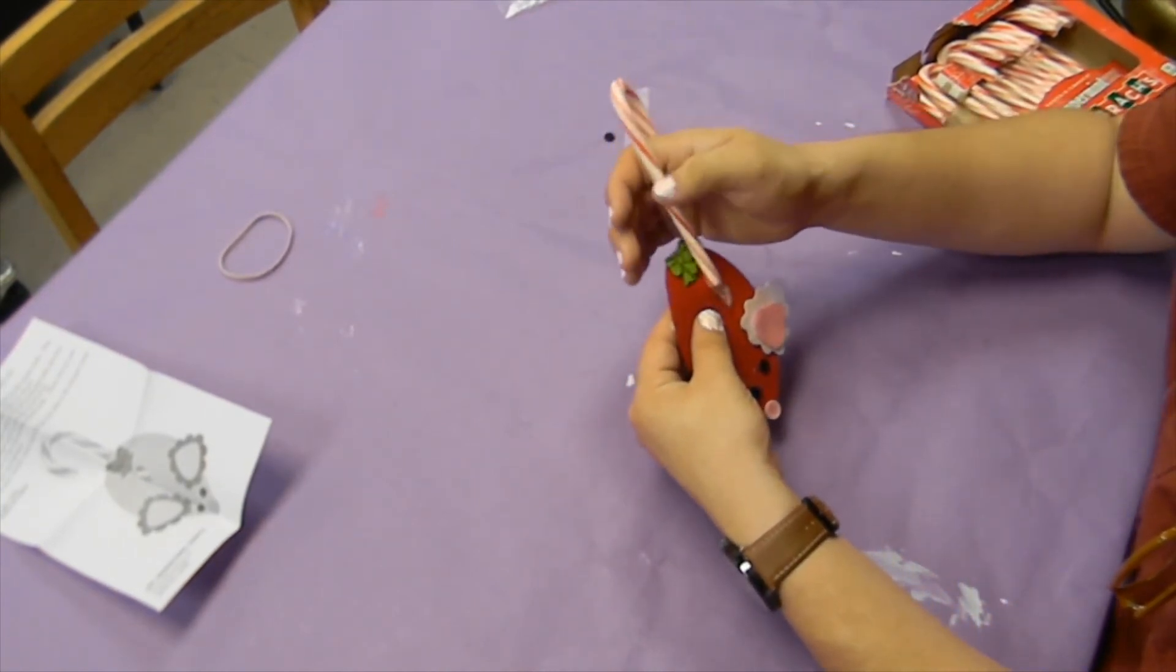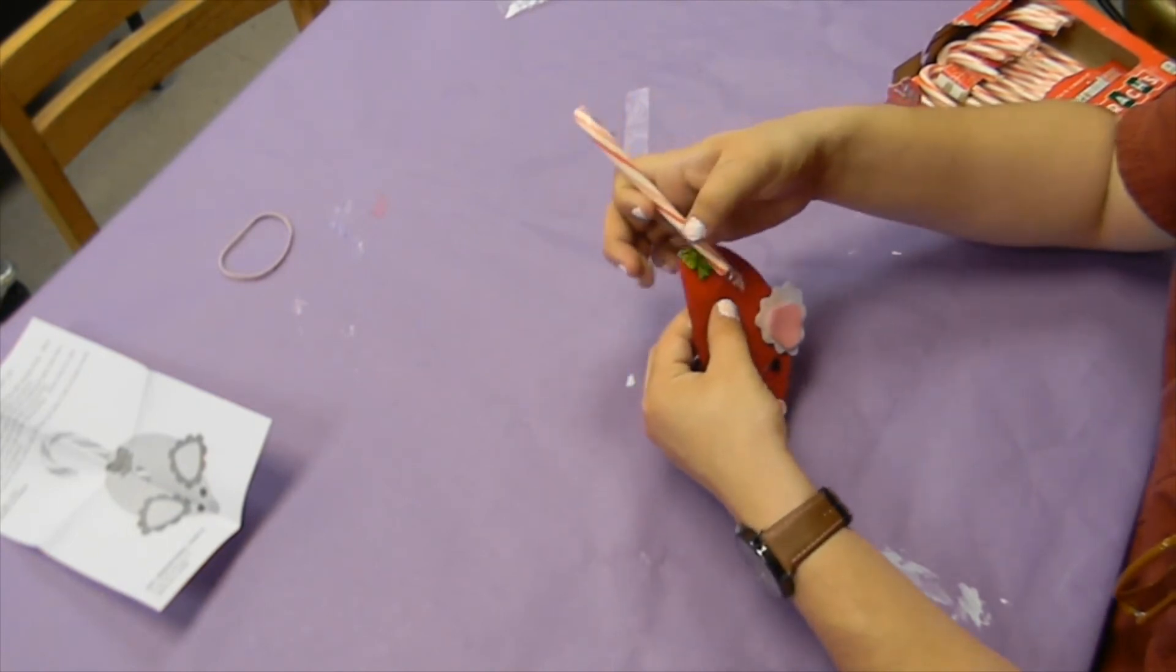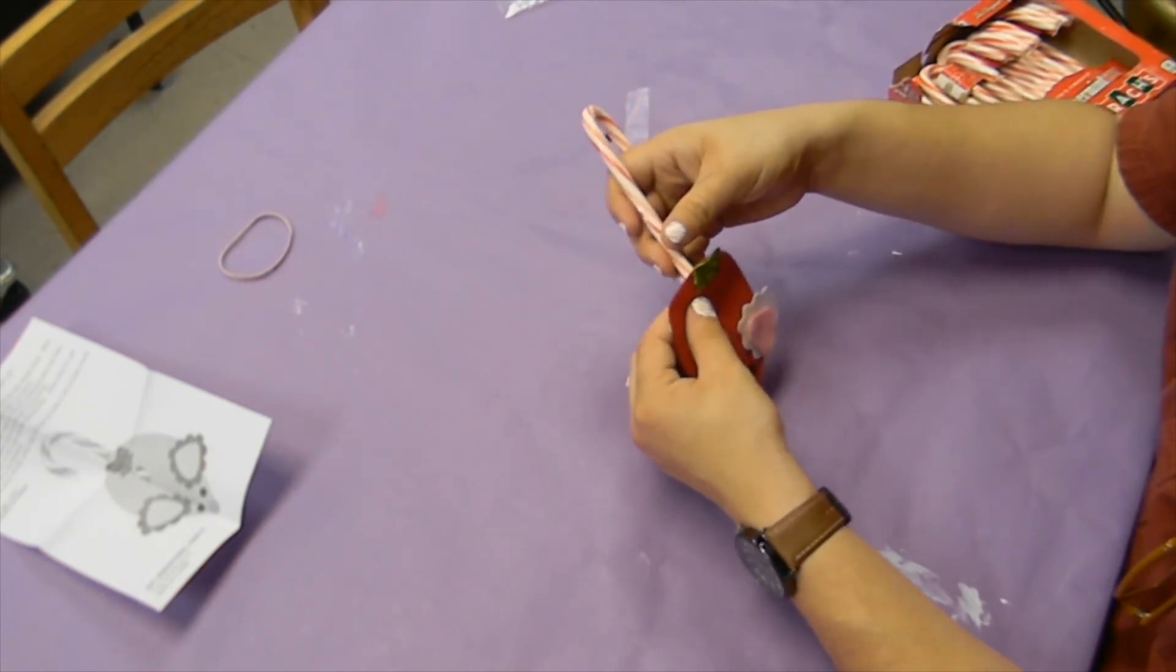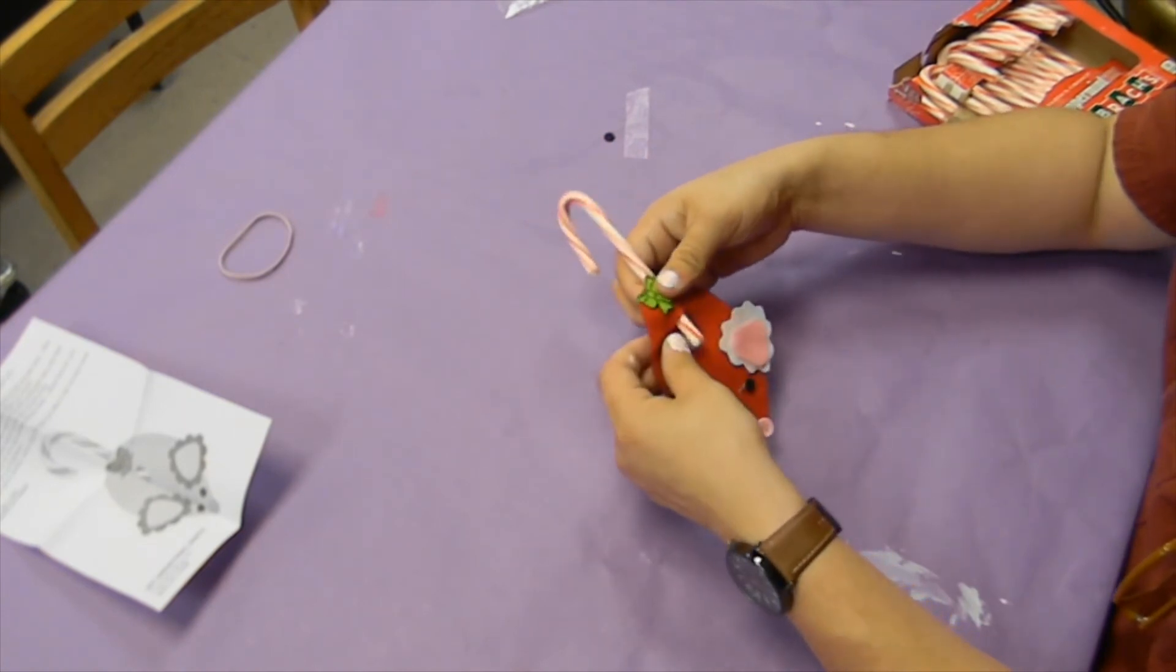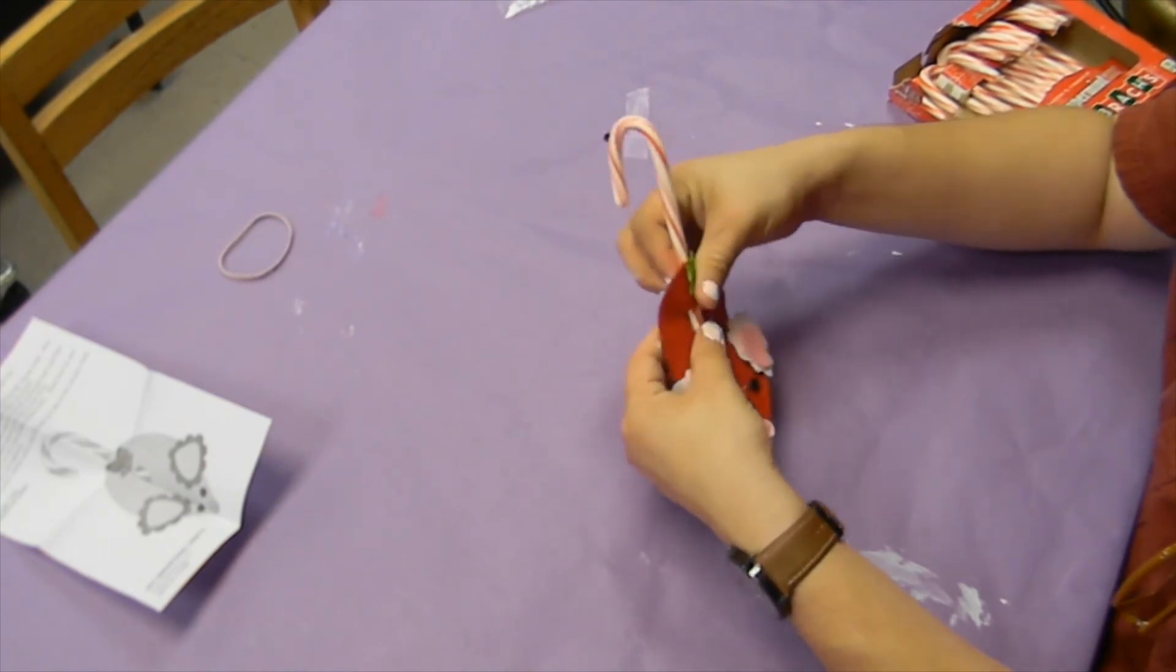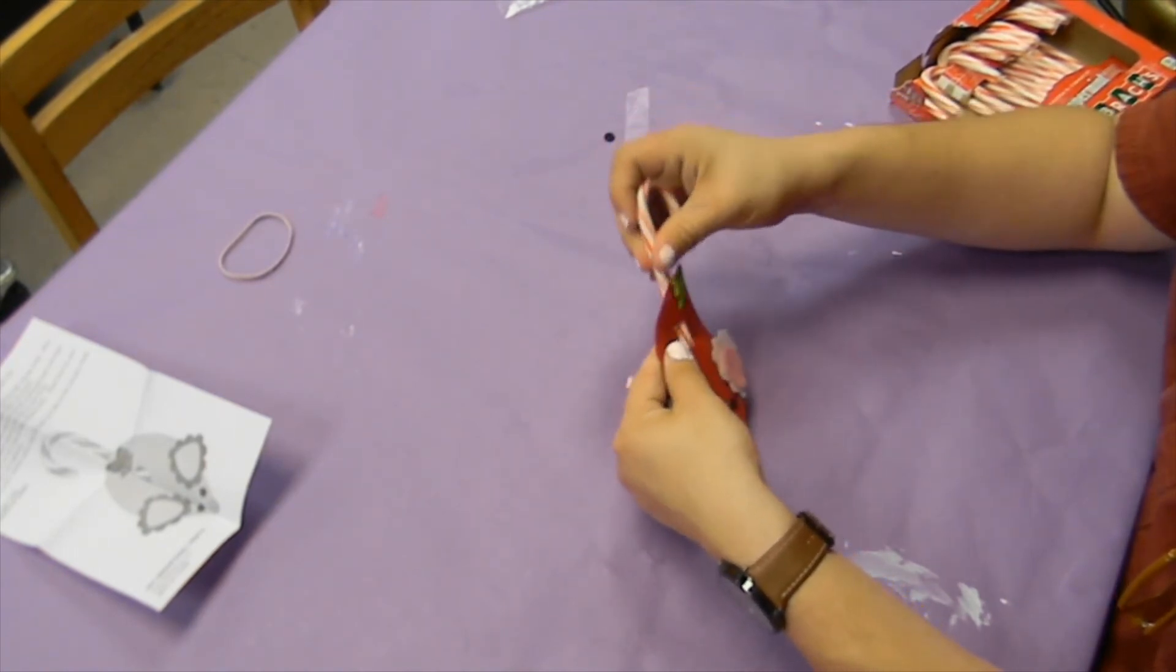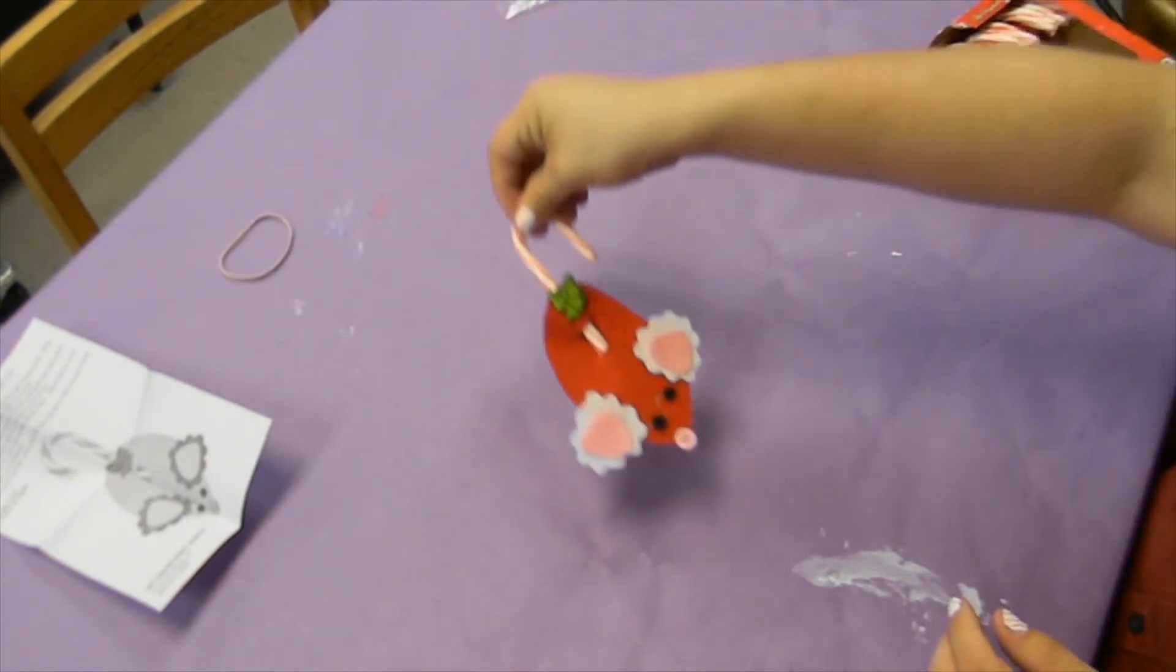As you'll notice here, it has some pre-cut areas. And you're going to kind of put it in from the back. And then have it go down the front. And there's your candy cane mouse.